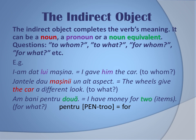Another example with a noun: 'jantele dau mașinii un alt aspect' — the wheels or the rims give the car a different look. To what? 'Mașinii' — the car. And with a noun equivalent: 'am bani pentru două' — I have money for two, as in two bottles of wine or two beers. 'Două' is a numeral that substitutes a noun.